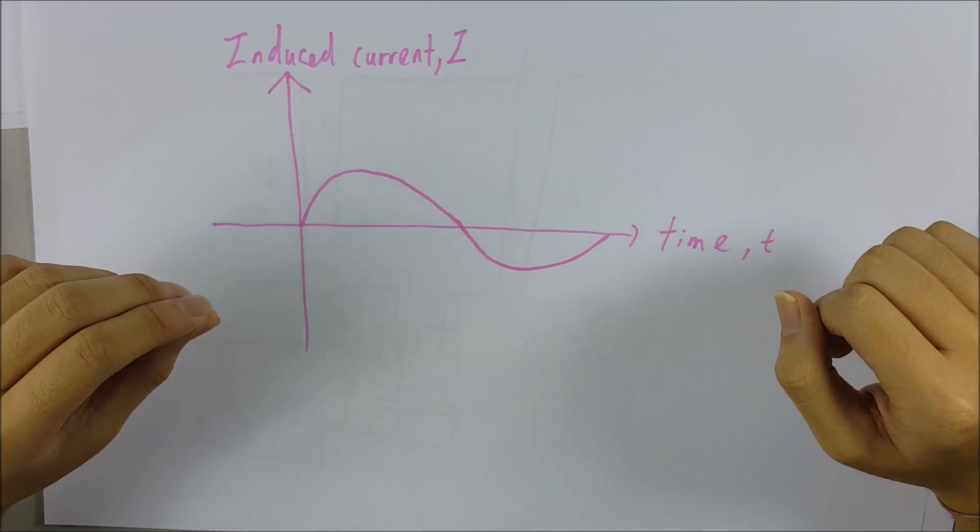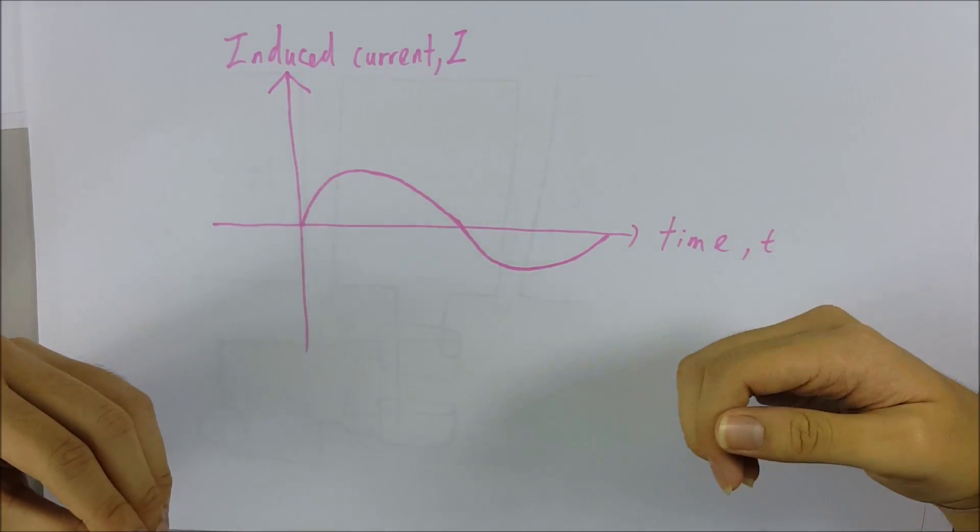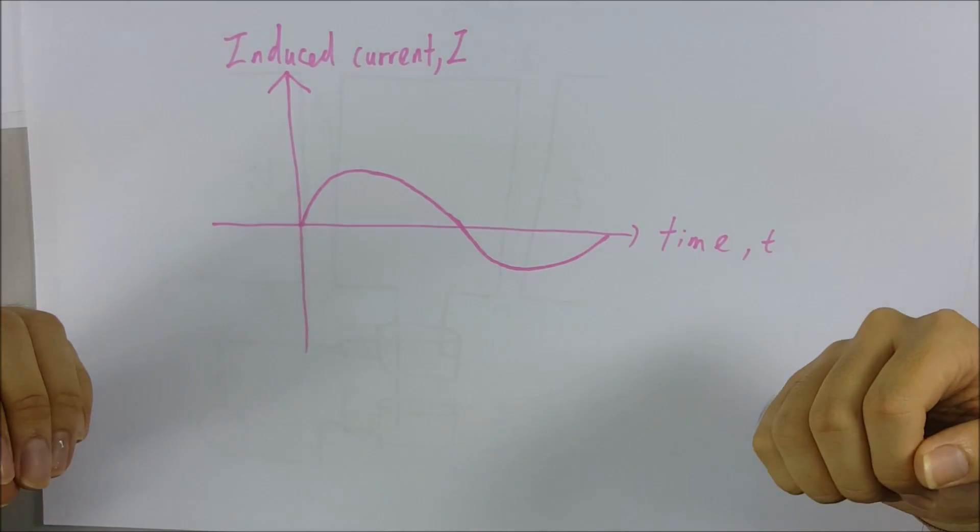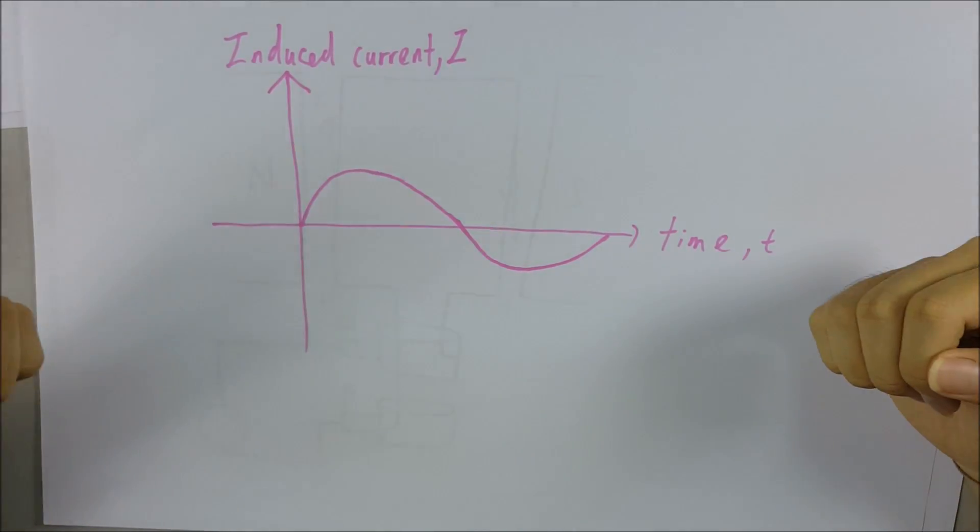So I think that's all for the operating principle of an alternating current generator. Hope you guys enjoy it, thank you.